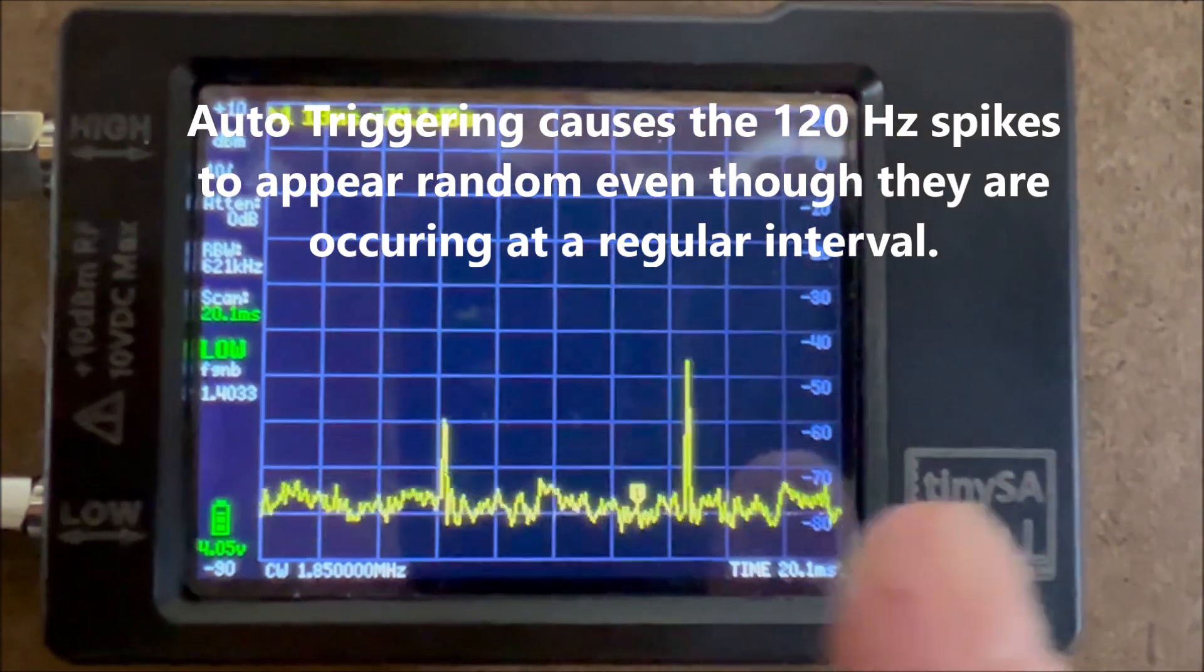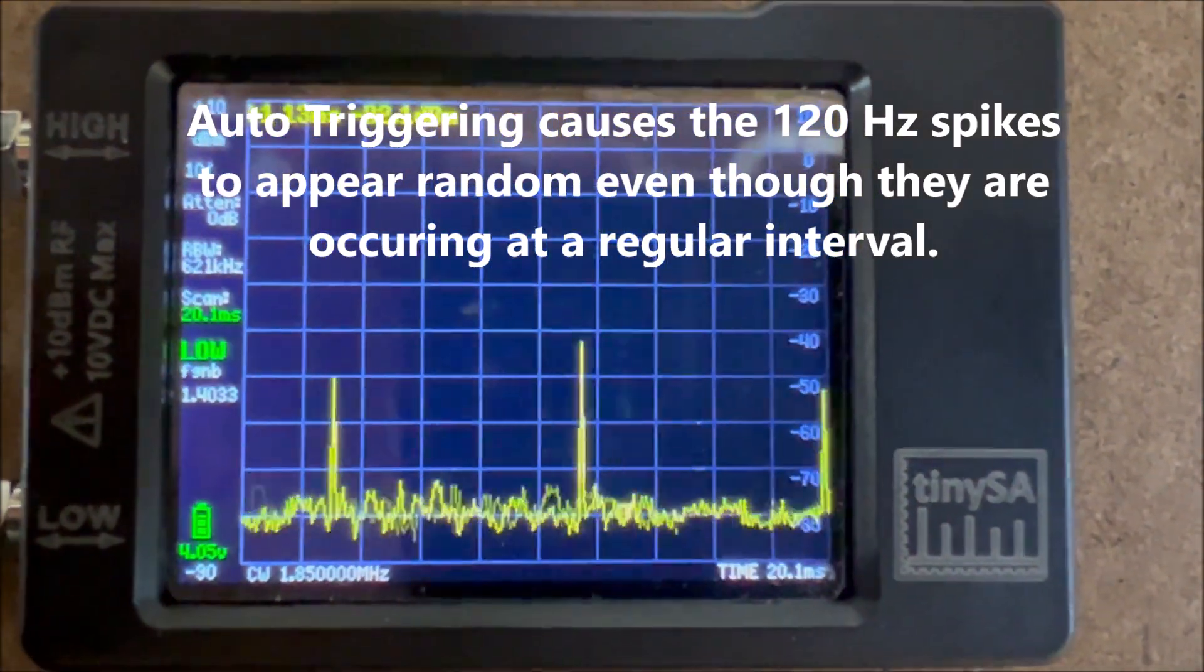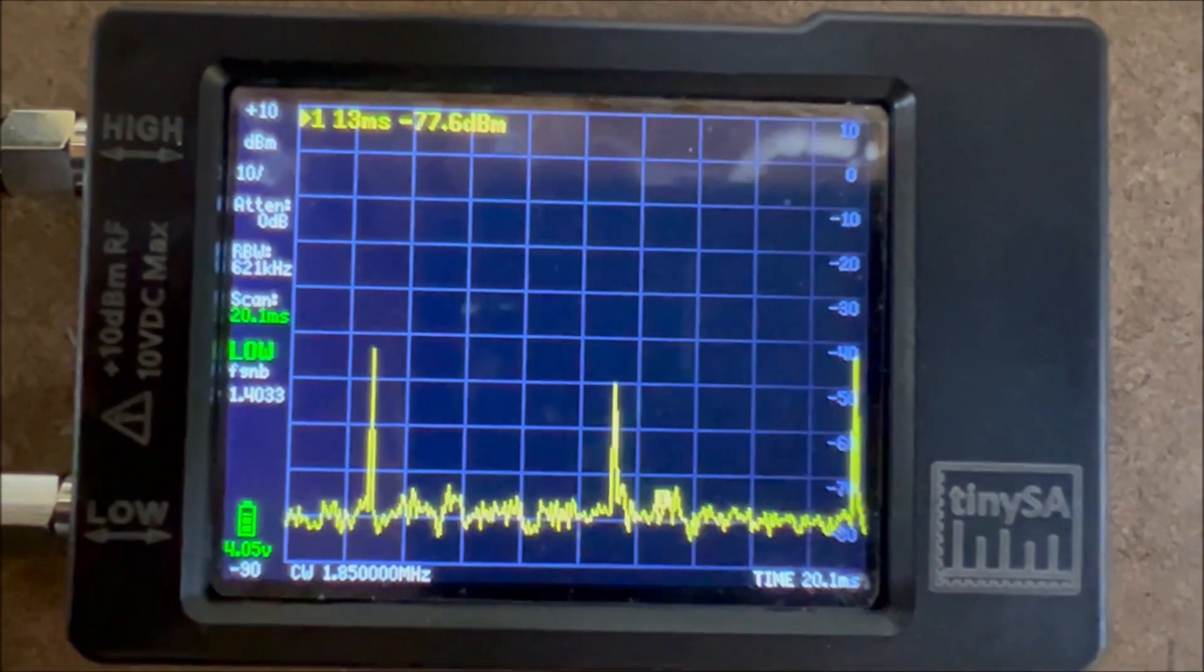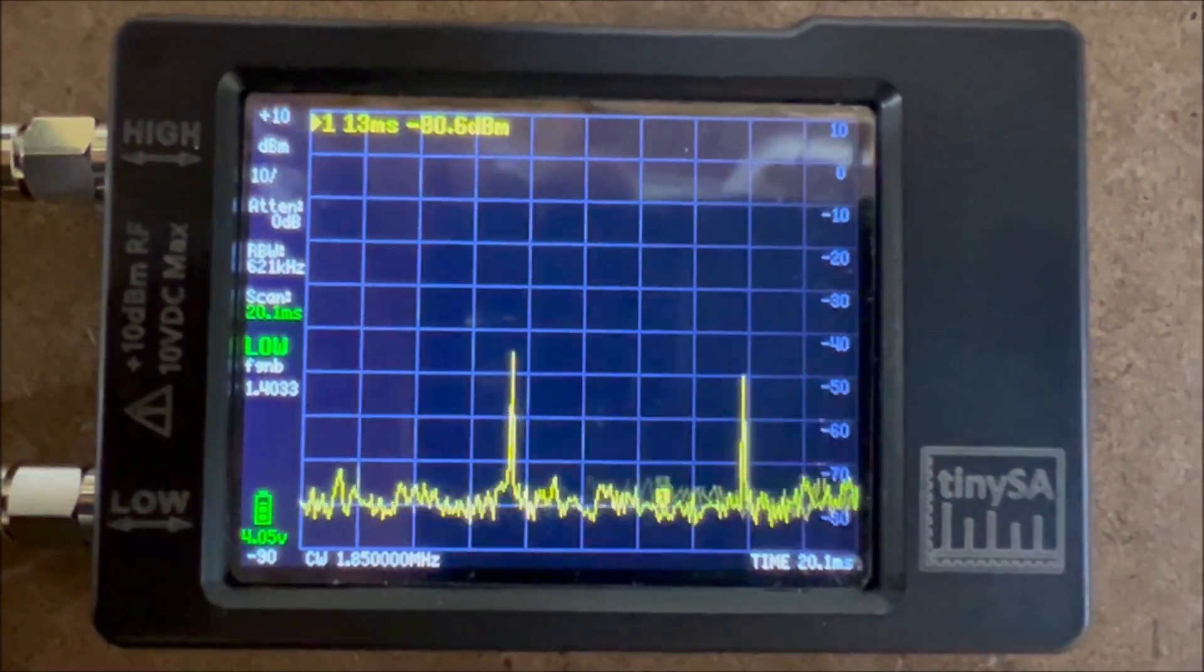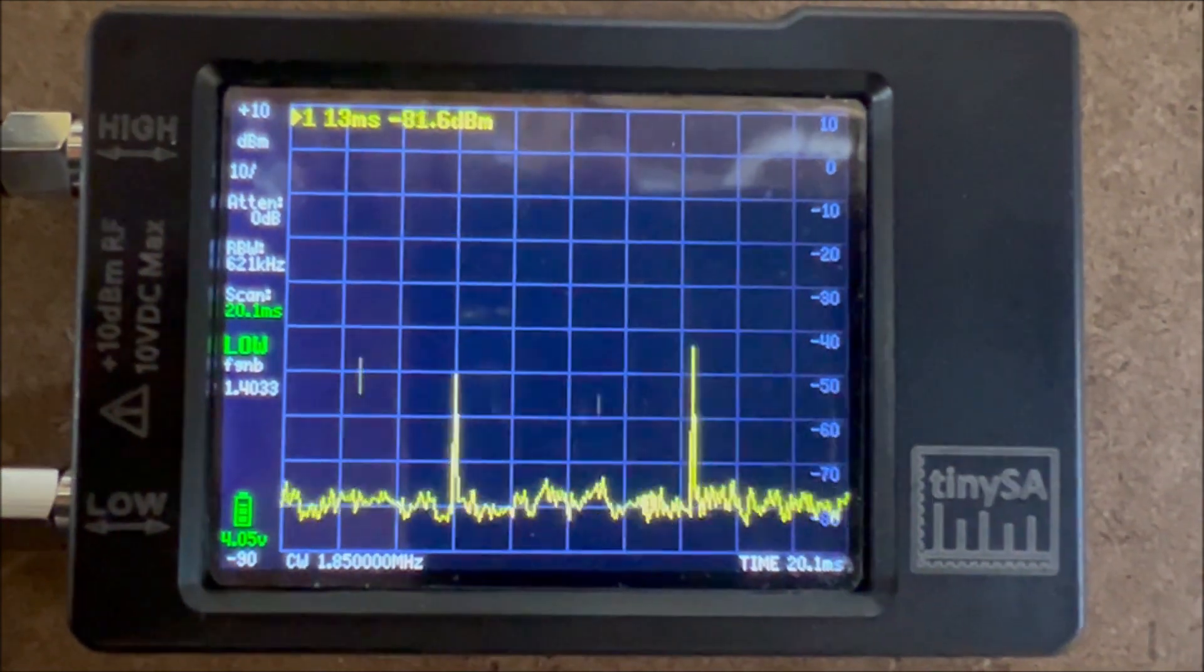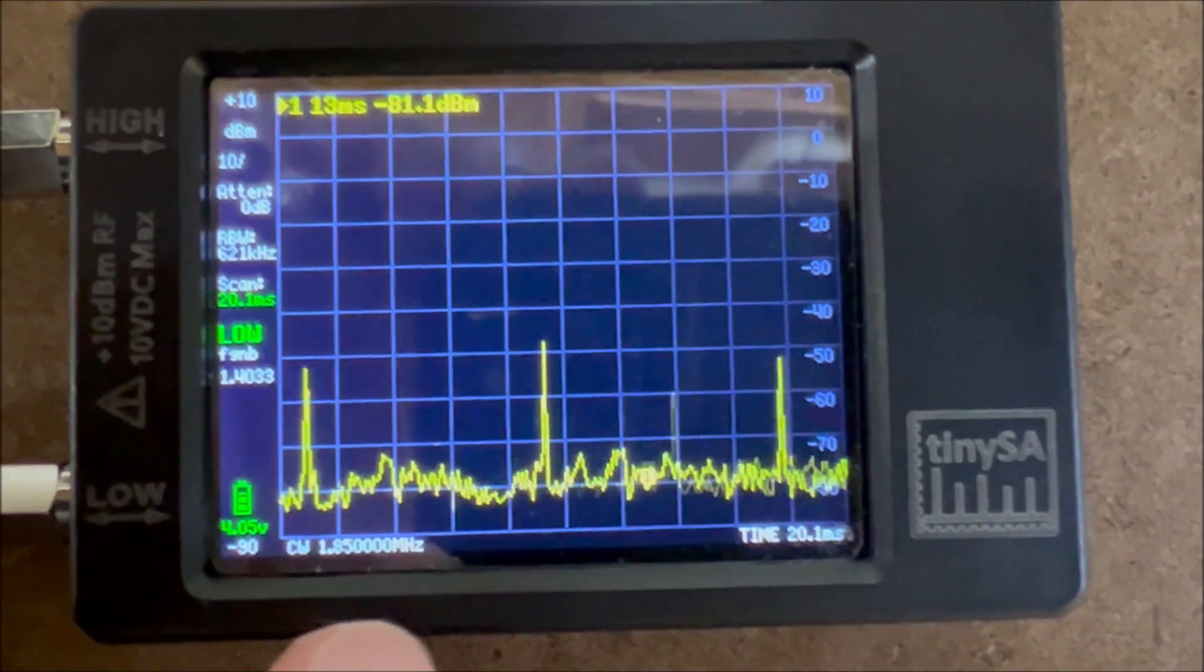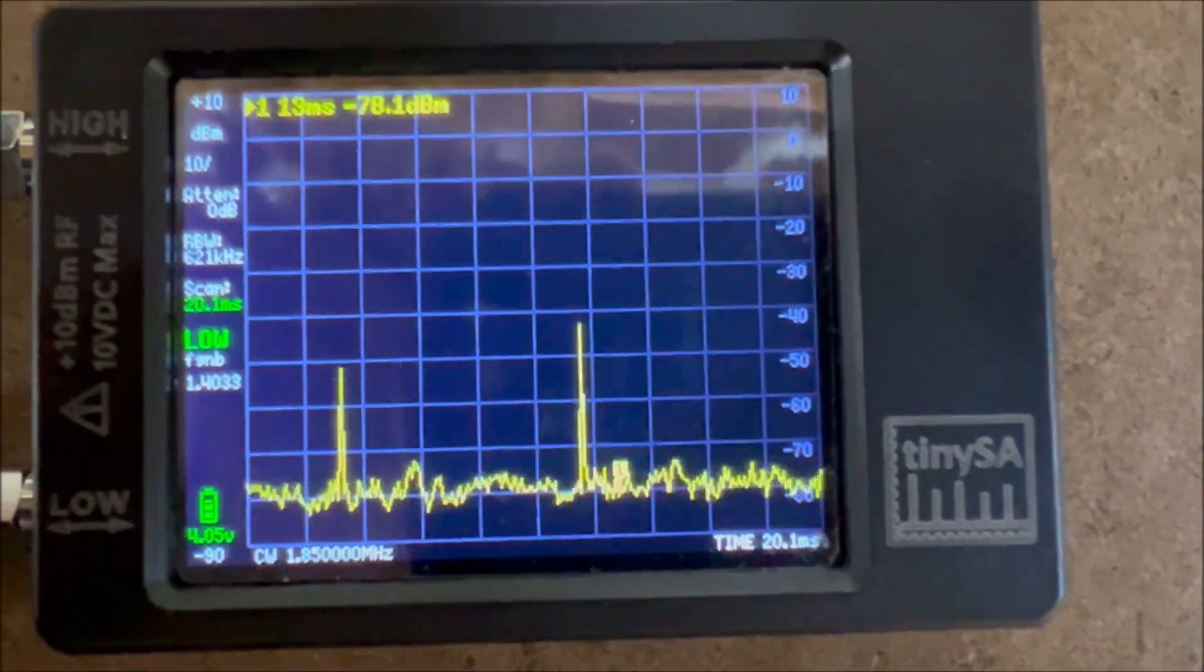The problem with that is that these spikes that you're seeing, which I'm artificially generating with a signal generator, the signal generator is set at 60 Hz, so I'm generating harmonics, very high frequency harmonics that are spreading up to at least 1.85 MHz.